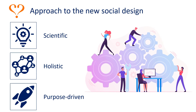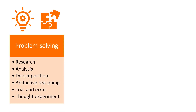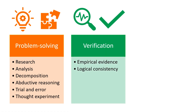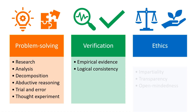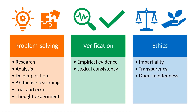The approach or method to the new social design in this project is scientific, holistic, and purpose-driven. The scientific method includes problem-solving techniques such as research, analysis, decomposition, abductive reasoning, trial and error, and thought experiment. There is also verification based on empirical evidence and logical consistency. The scientific method relies on ethical principles such as impartiality, transparency, and open-mindedness.